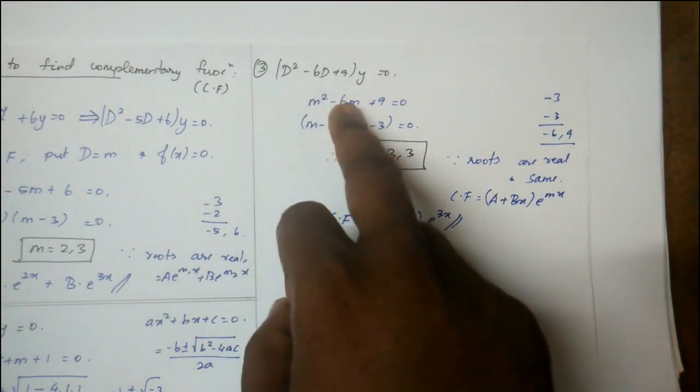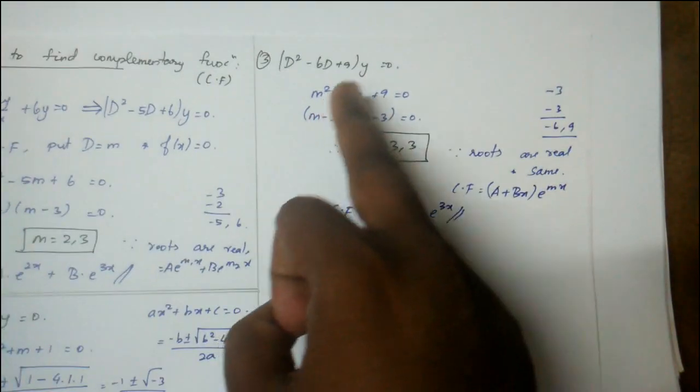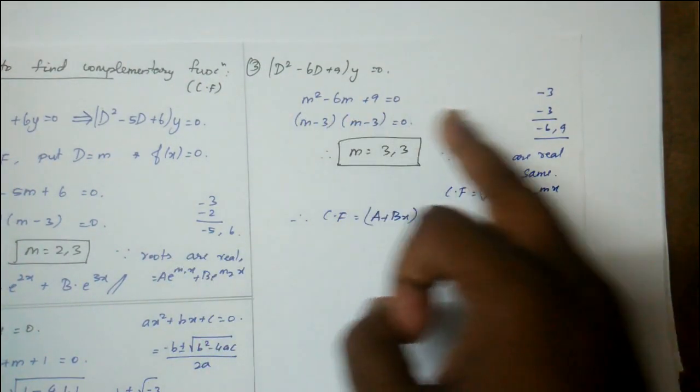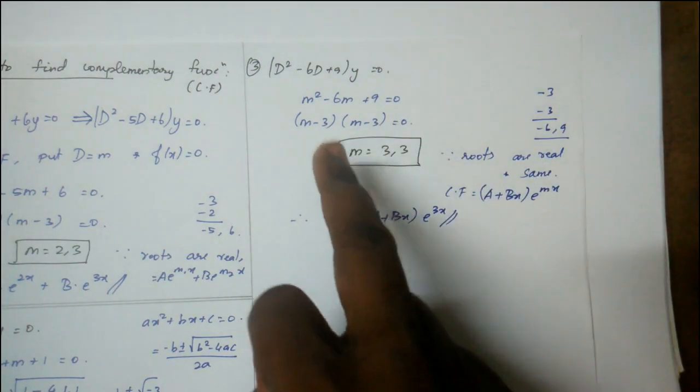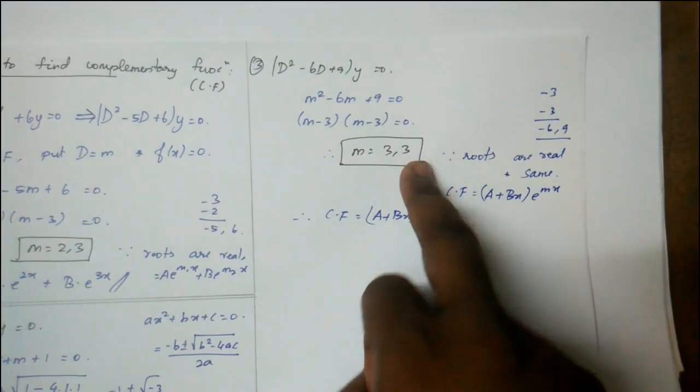Take m² - 6m + 9 = 0. Factor as (m-3)(m-3). The roots are 3, 3.